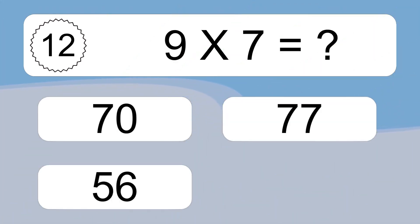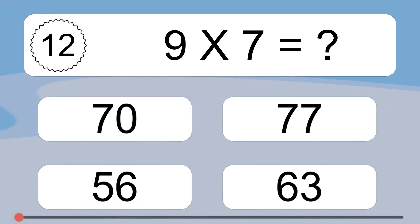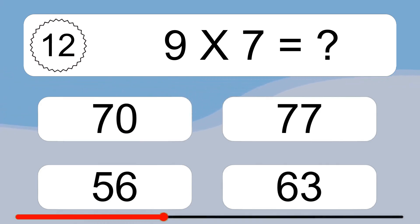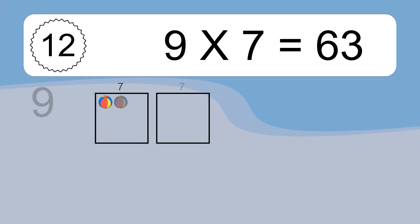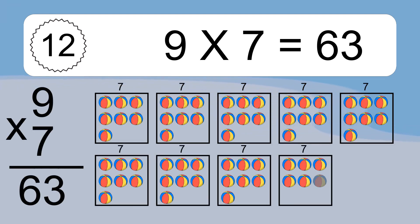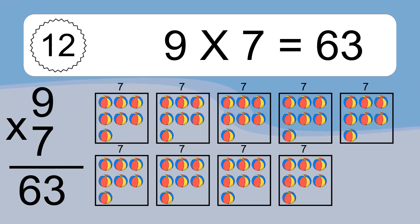Nine times seven equals what? Nine times seven equals 63. We have nine boxes, and each box has seven colorful balls inside. If you count all the balls in all the boxes together, you will have nine times seven balls. This equals 63 balls.